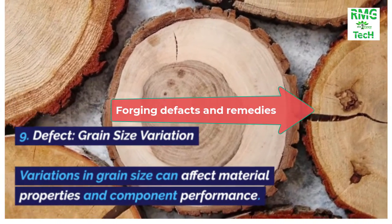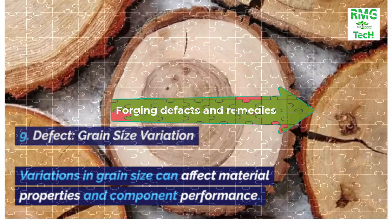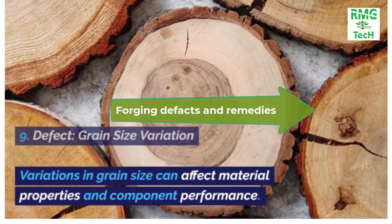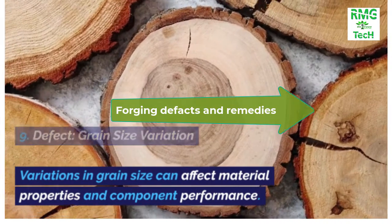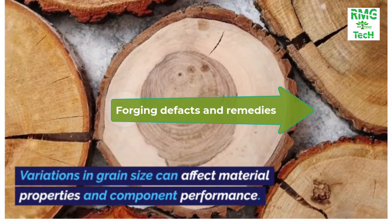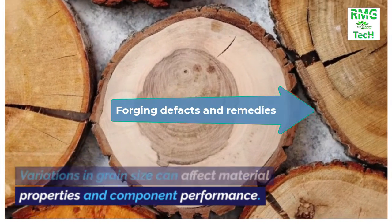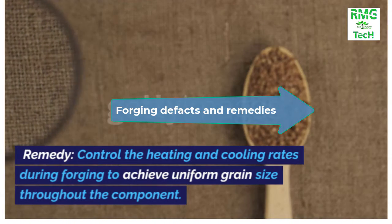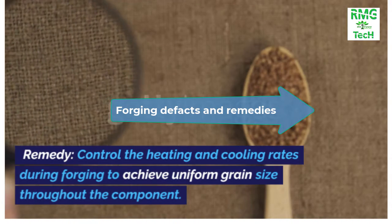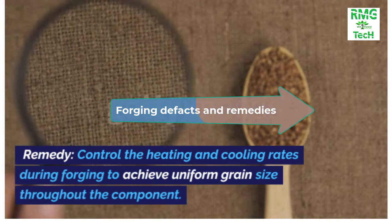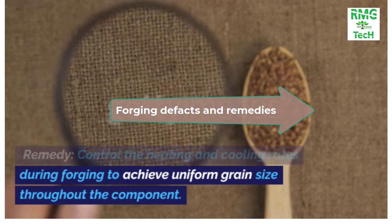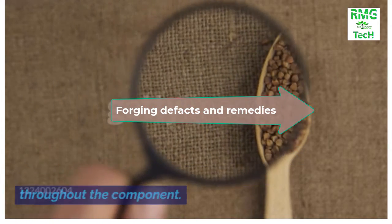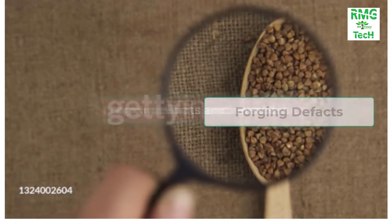Defect 9: Grain size variation. Variations in grain size can affect material properties and component properties. Remedy: Control the heating and cooling rates during forging to achieve uniform grain size throughout the component.